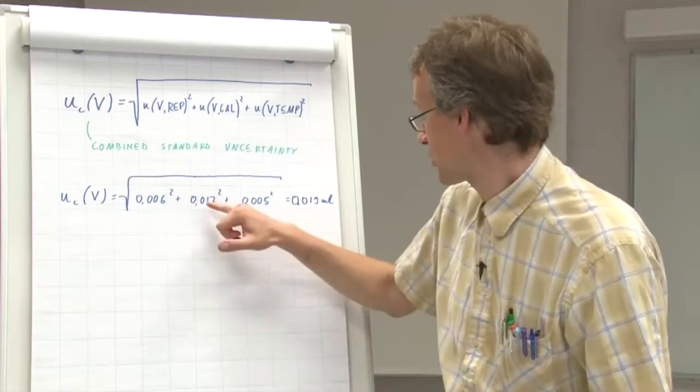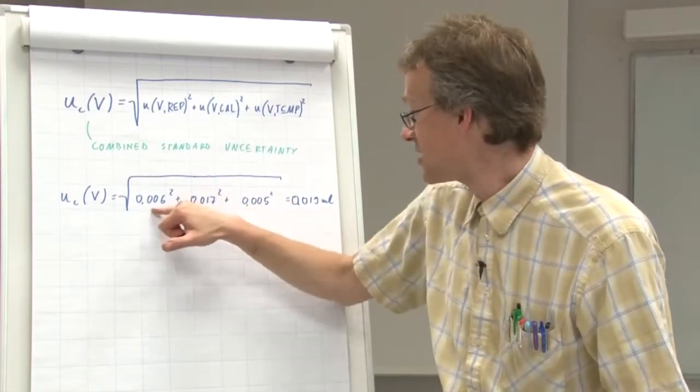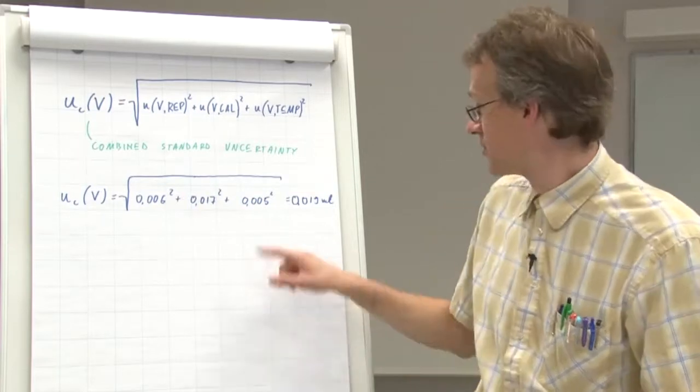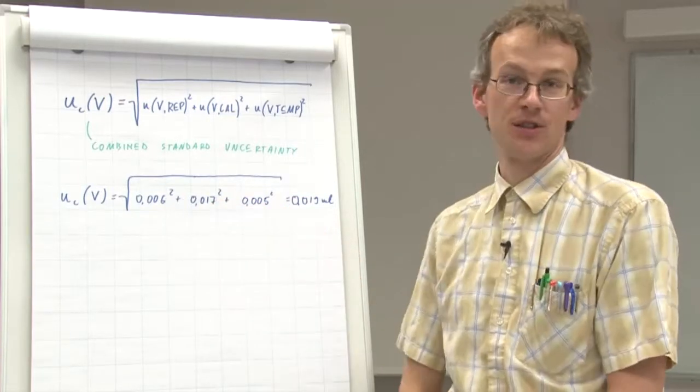And this uncertainty component, as we easily can see, is the largest of the three. This is the uncertainty due to the calibration.